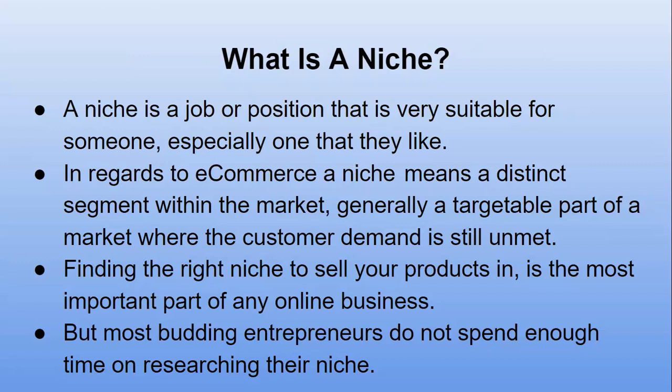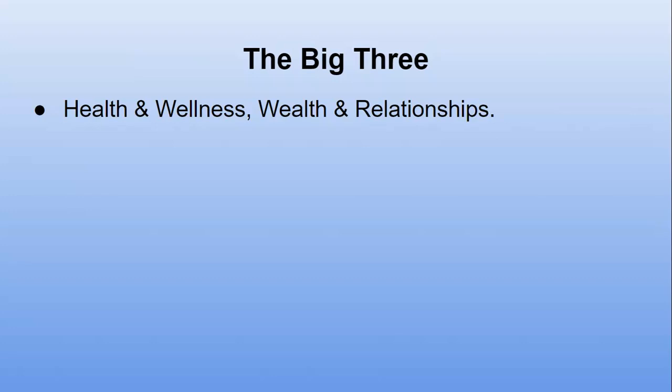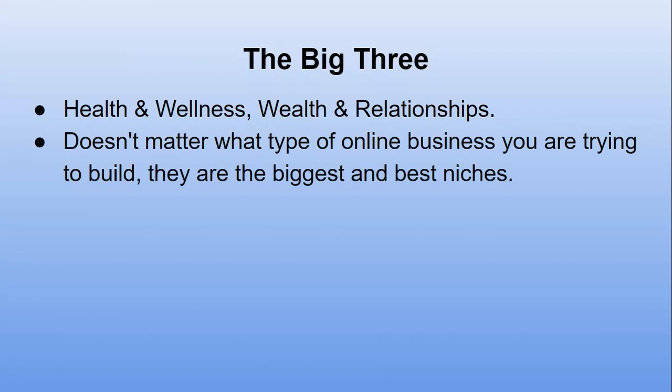The big three niches are health and wellness, wealth, and relationships. It doesn't matter what type of online business you're building — those are the biggest and best niches. Health and wellness examples: losing weight, quitting smoking, fixing back pain. Wealth: setting up an online business, card playing, gambling. Relationships covers dating and finding a partner, but also the relationship between a mother and son, father and daughter, brother and sister.